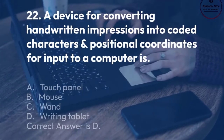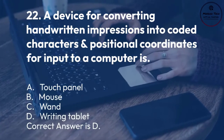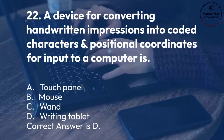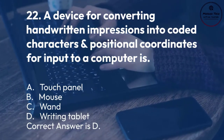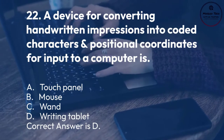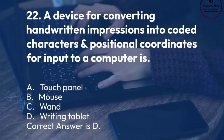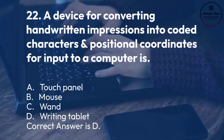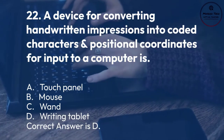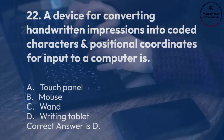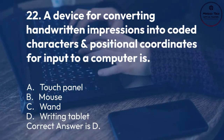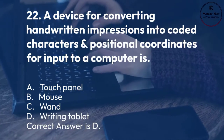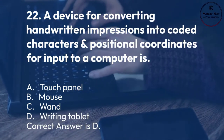Number 22. A device for converting handwritten impressions into coded characters and positional coordinates for input to a computer is: A. Touch panel. B. Mouse. C. Wand. D. Writing tablet. Correct answer is D.